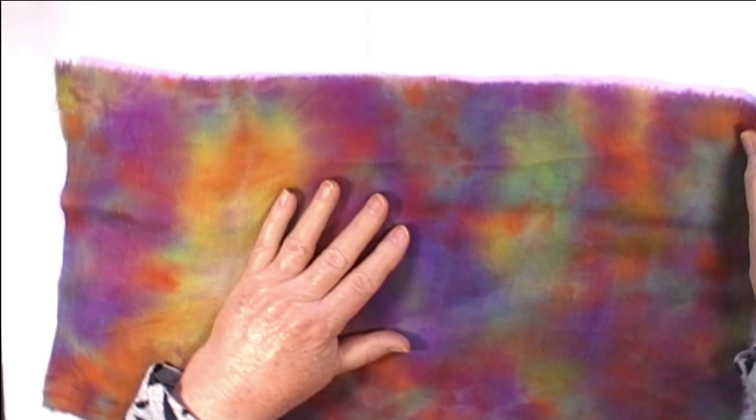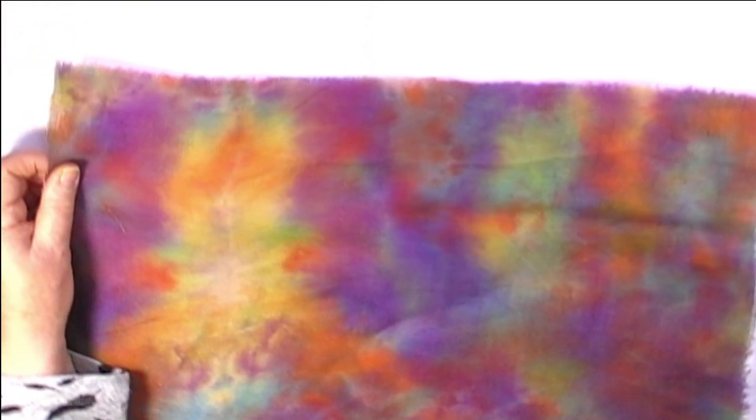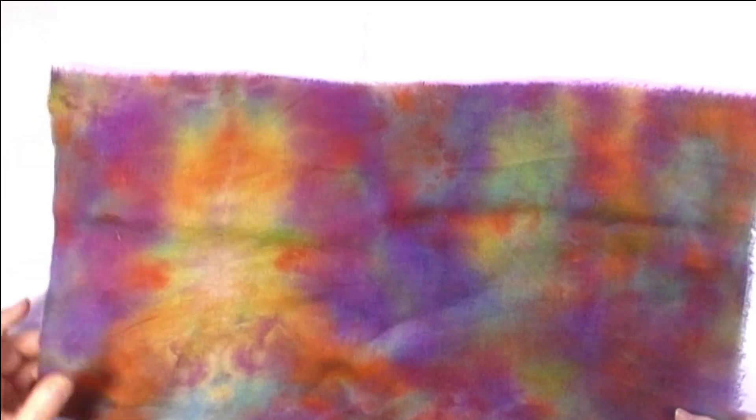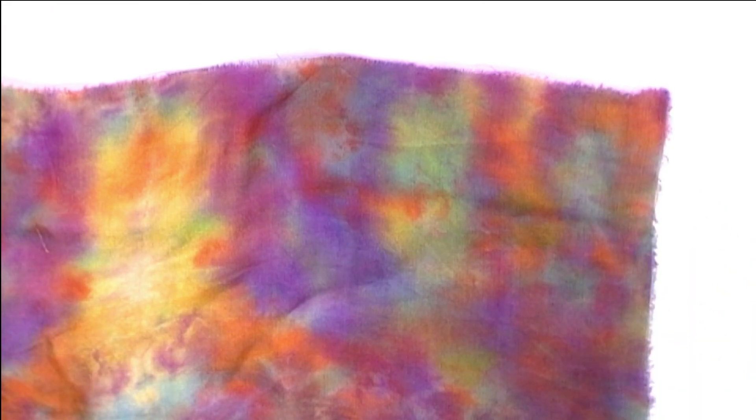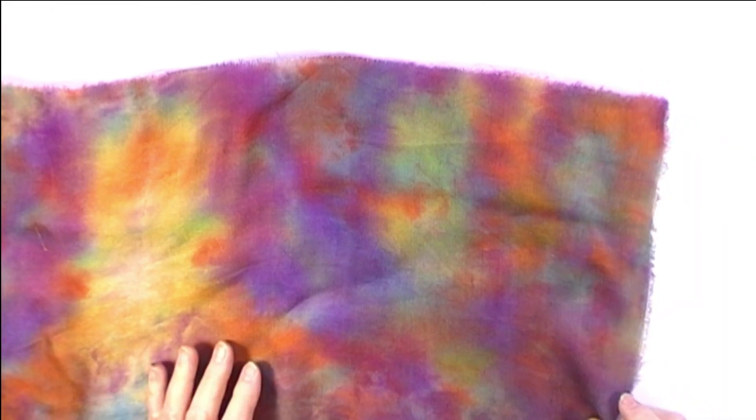This fabric doesn't have a right and a wrong side but if yours does then you need to put them right sides together and the first thing to do before we fold it is just to run a seam along one of the narrow ends. So I'll just do that and I'll be right back.